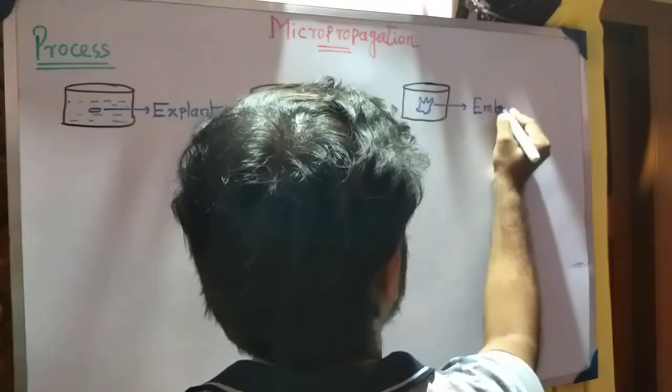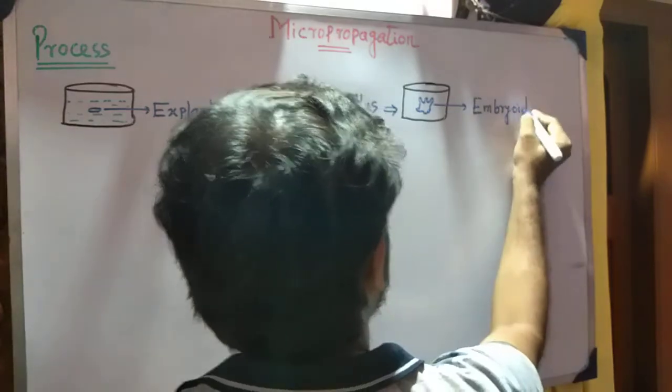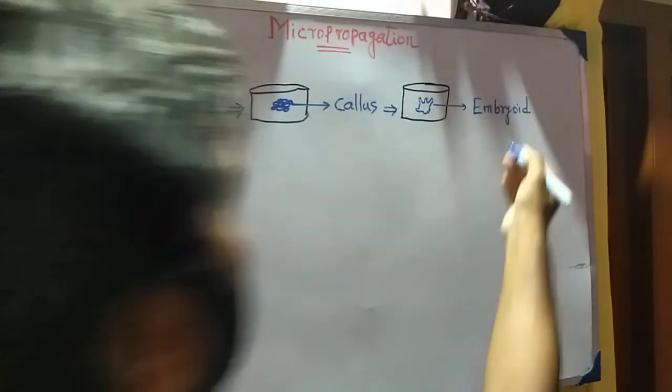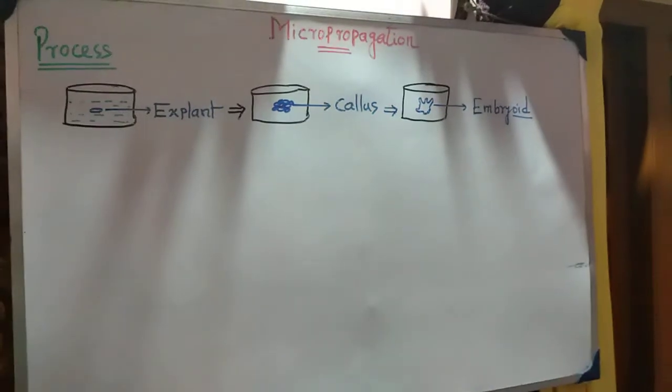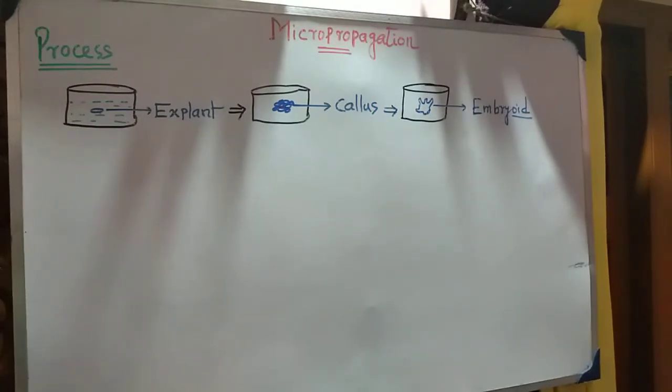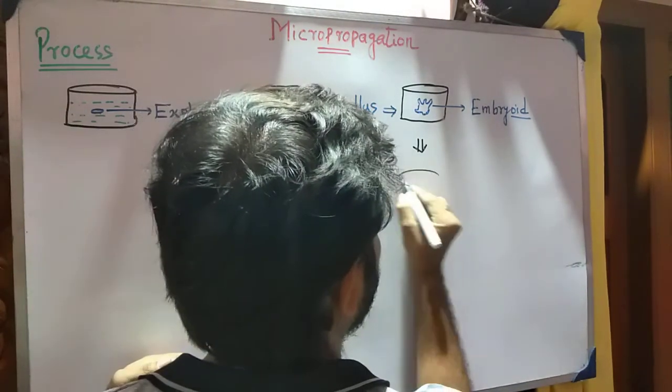It's an embryoid. This embryoid is the somatic embryo. In this, the embryoid forms from callus. This embryoid is also like a normal embryo.